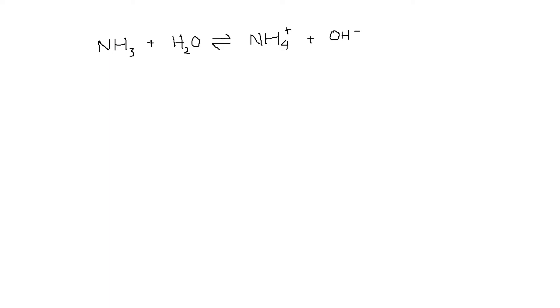In this video we're going to think about how the ion product of water relationship arises, and to do this we're going to use the example of the reaction of ammonia with water which is represented by the equilibrium reaction that's shown here.